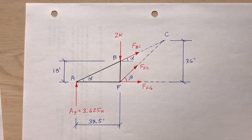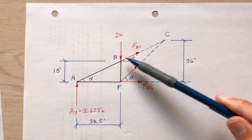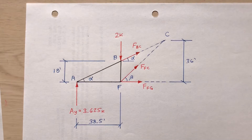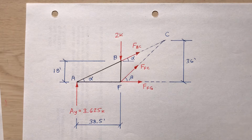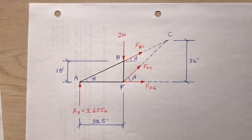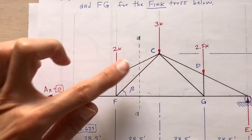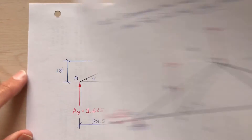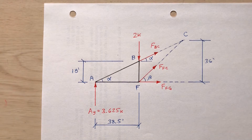Now watch what happens when I cut section AA. The black lines represent the original bar members — there was a bar from B to C and a bar from F to C. When I cut section AA, I replace those bars with external forces on the left portion of the truss. So I now have unknown bar forces BC, FC, and FG, which become external forces in this free body diagram.